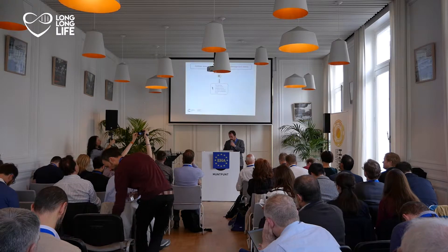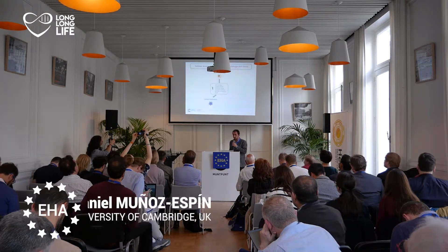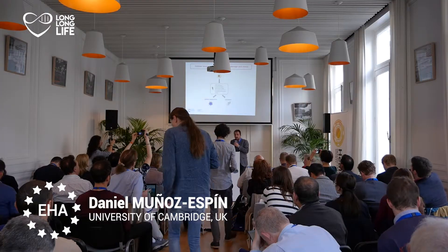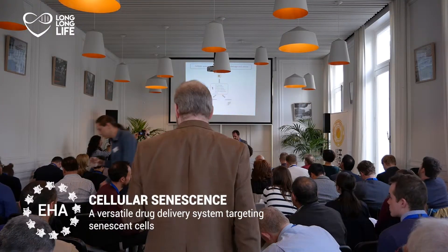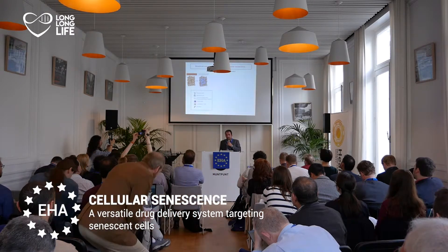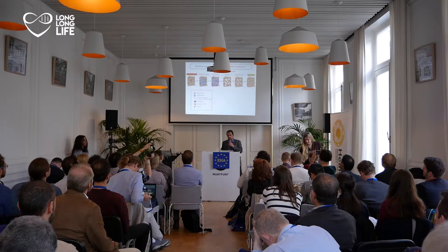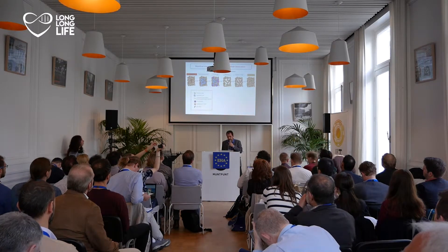Cellular senescence is a response to multiple types of damage resulting in a stable cell cycle arrest. Similarly to senescence, apoptosis can also be triggered by the same set of cellular events. One of the main differences is that senescent cells can implement a complex secretory phenotype — the SASP — which is able to recruit the immune system, so these cells can be cleared efficiently, resulting in tissue regeneration and complete repopulation of the damaged tissue.